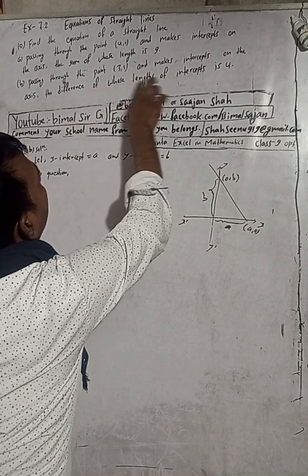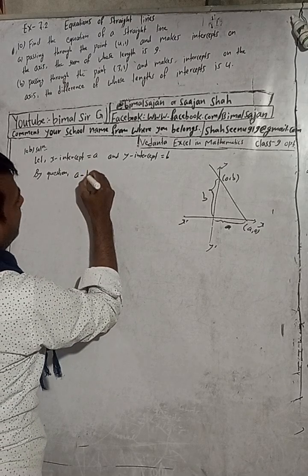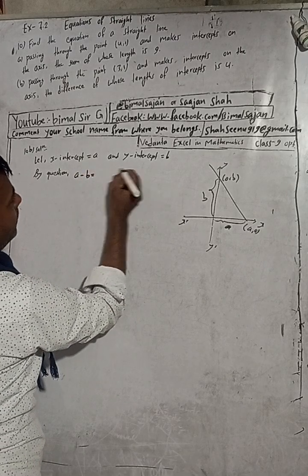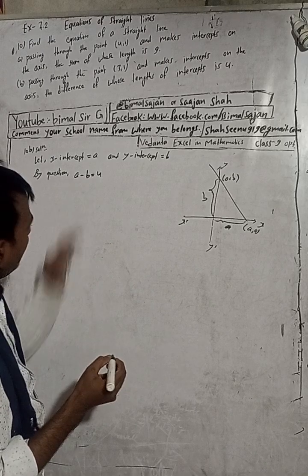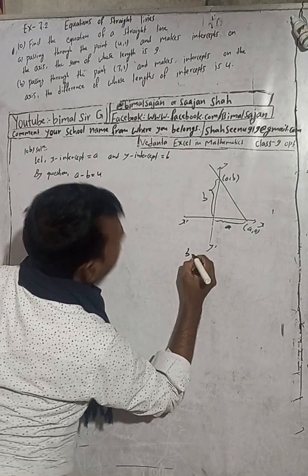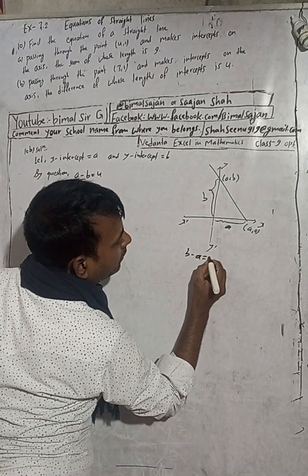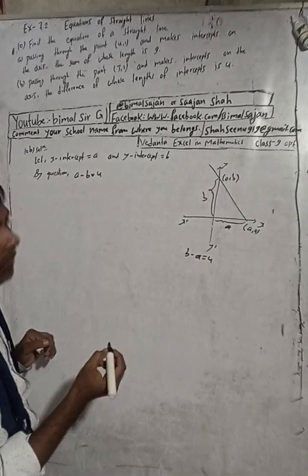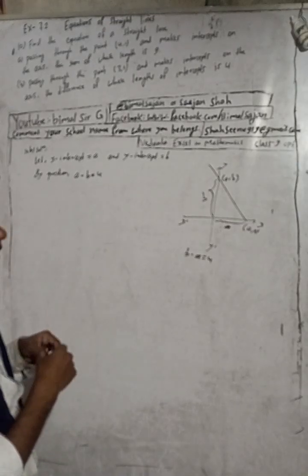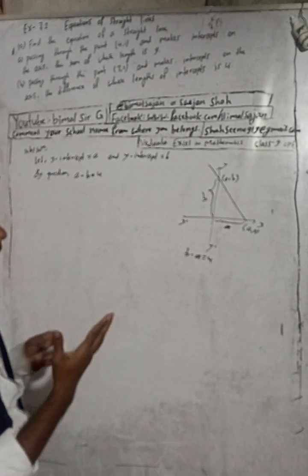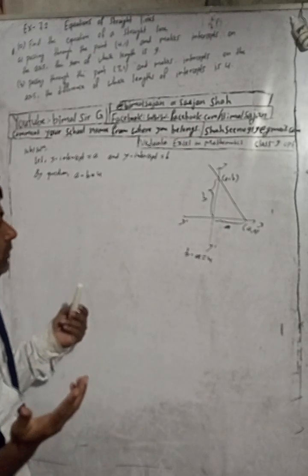So by the question, the difference of whose length of intercept — a minus b, or b minus a, is equal to 4. Even if you write b minus a is equal to 4, you will get the same answer. You can try that and comment back whether you get the same answer or a different answer.